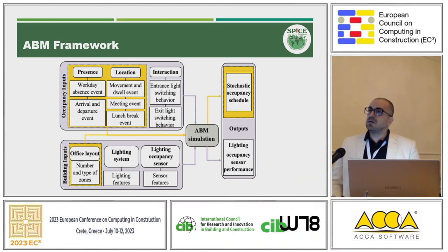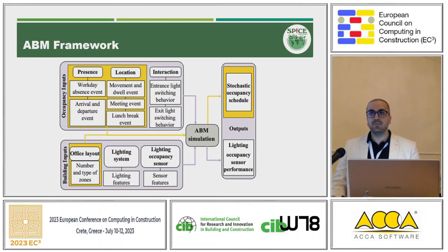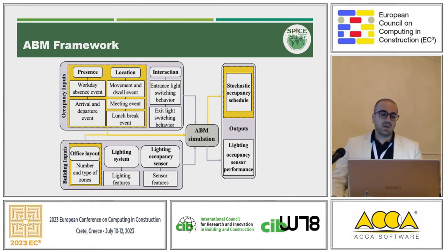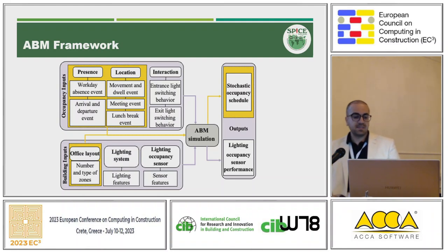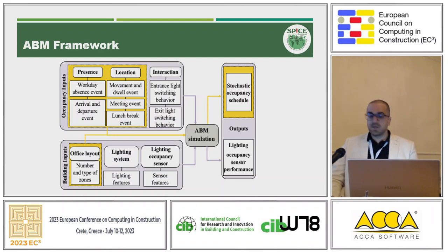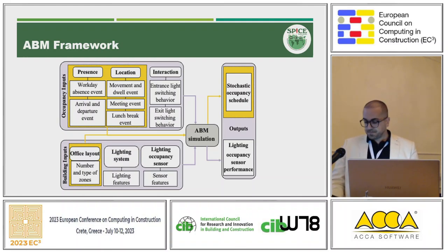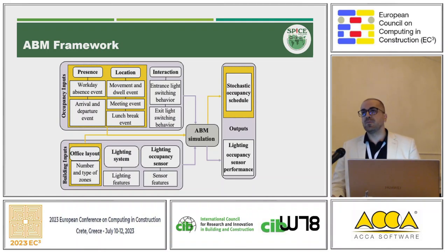This is the agent-based modeling framework that we propose. We consider three occupancy inputs: occupant presence, location, and interaction. And then building inputs in the environment, including the layout of the building, lighting systems, and the existence of occupancy sensors, to produce what we call a stochastic occupancy schedule and the lighting performance of the building based on that schedule.